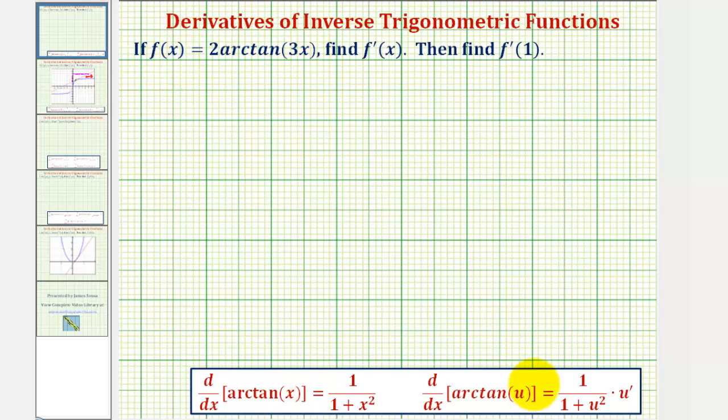Looking at our derivative formulas here below, the derivative formula on the left is for the derivative of the basic function arctangent x with respect to x, but the second derivative formula here on the right also includes the chain rule, where we have the derivative of arctangent u with respect to x, and therefore u would be the inner function.